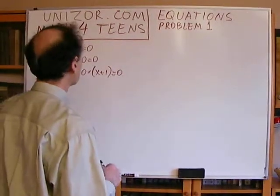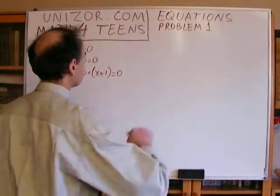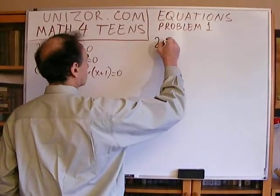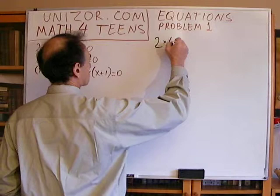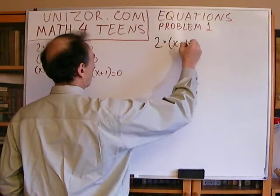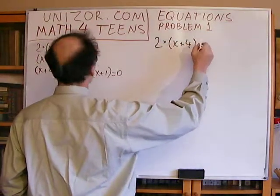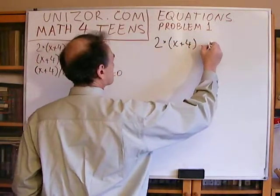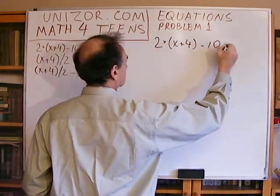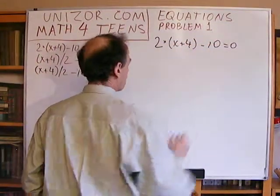Equation number one: 2 times x plus 4 minus 10 equals 0.